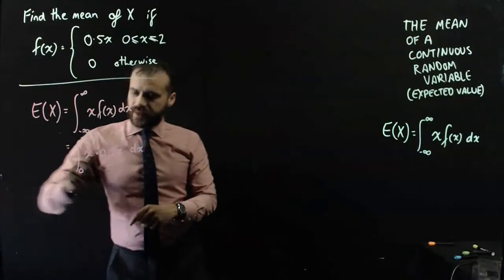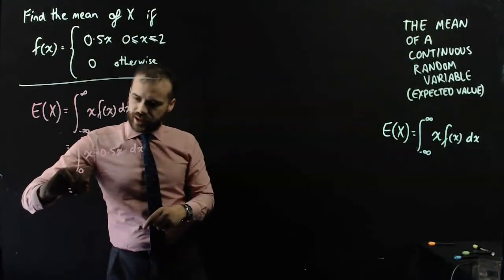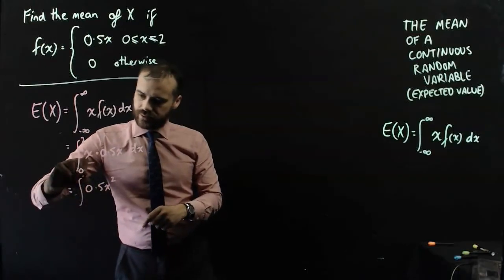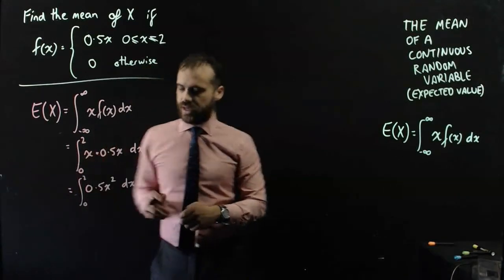Okay, now, x times 0.5x is 0.5x squared between 0 and 2, with respect to x.